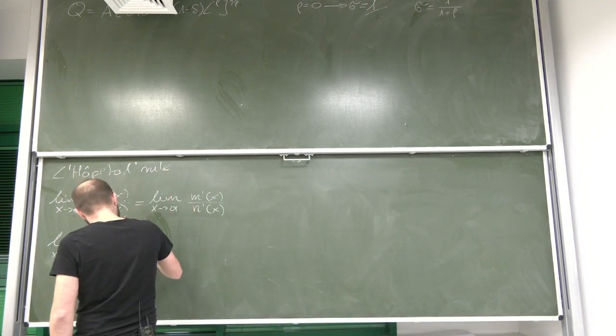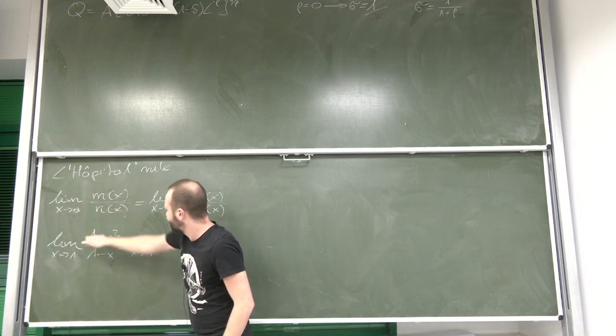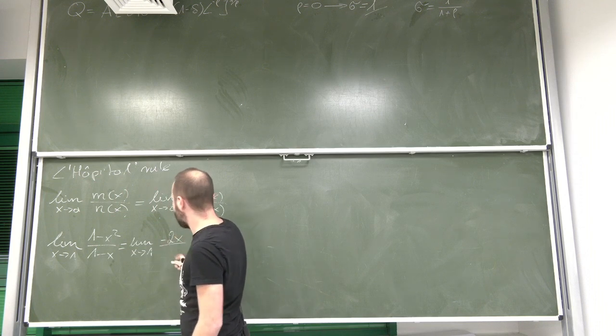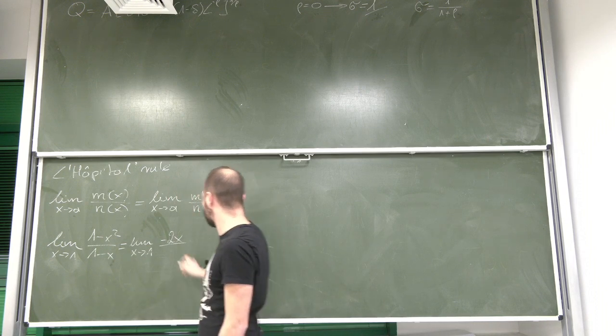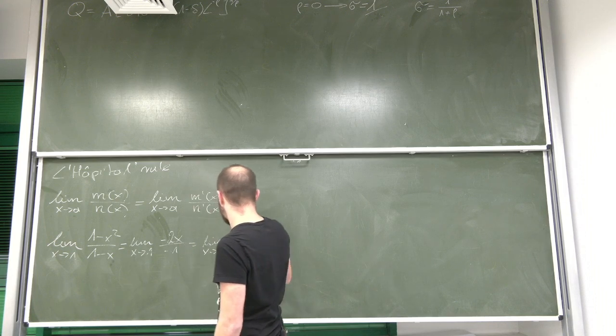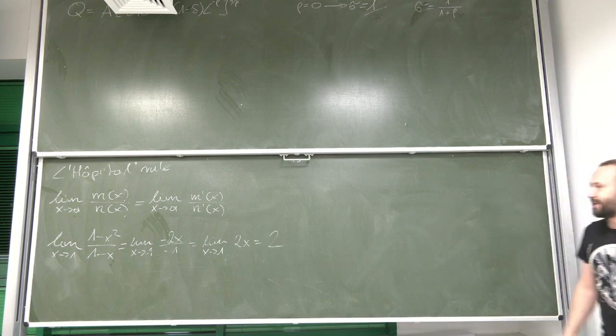So let's apply L'Hôpital's rule. What we're going to get is I differentiate the expression over here. I get negative 2x. I divide this by derivative of the expression at the bottom, which is negative one. So I need to calculate limit with x approaching one of 2x, which is simply two, because now I can simply substitute.